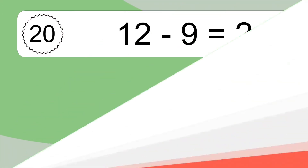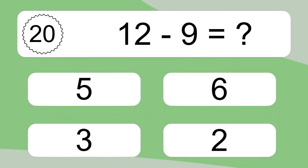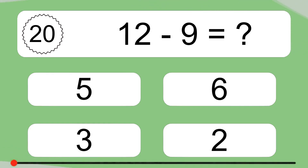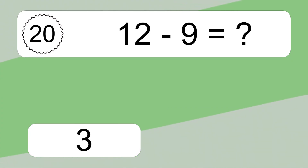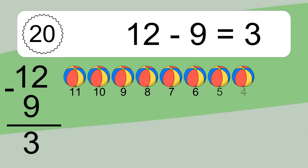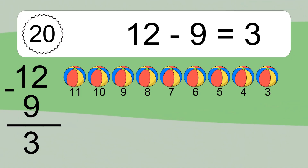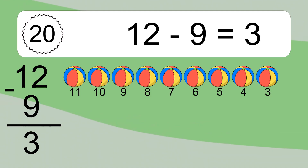12 minus 9 equals what? 12 minus 9 equals 3. Let's count it. 11, 10, 9, 8, 7, 6, 5, 4, 3.